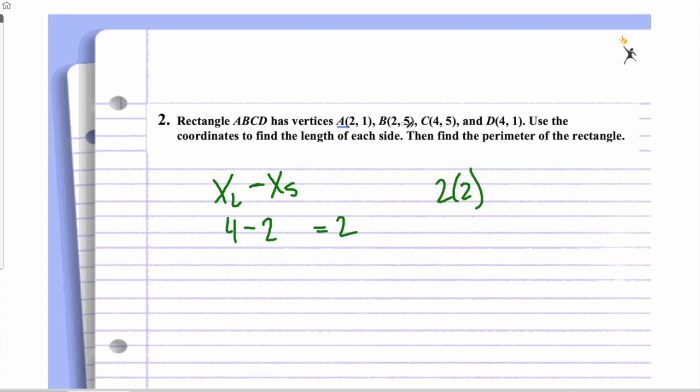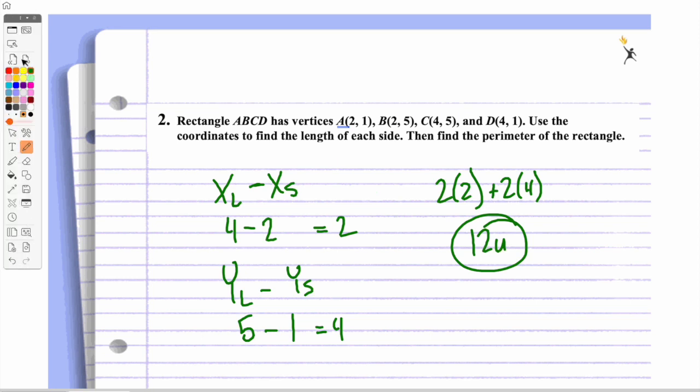And then I take my larger y value minus my x value, so my larger y, which is 5, minus my smaller y, which is 1, which equals 4. That's my height, so plus 2 times 4. And I get that same 12 units from the previous problem. Different coordinates, but same units.